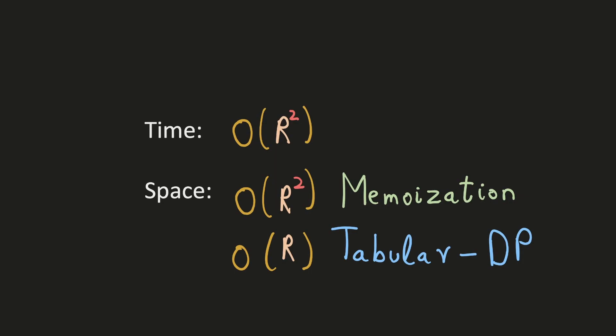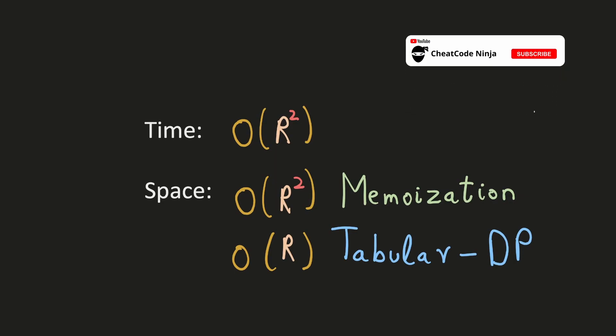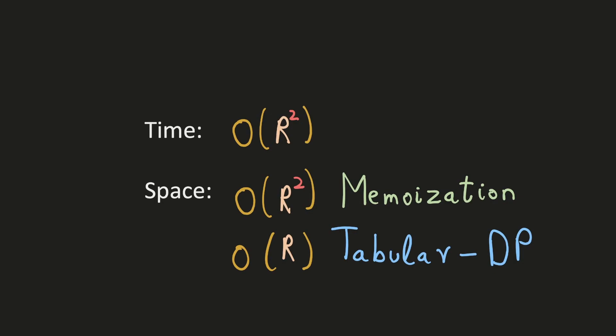The time complexity is O(R²) where R is the number of rows, since that is the total number of glasses and we calculate for each of them. The space complexity for the recursive memoization solution is O(R²) because it is two-dimensional. However, using a tabular approach — as seen previously — we can optimize space complexity down to O(R).